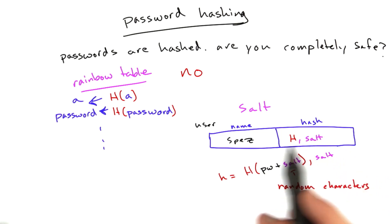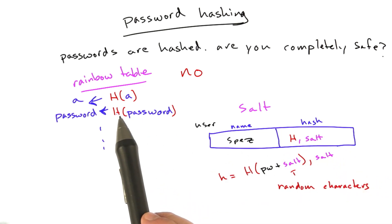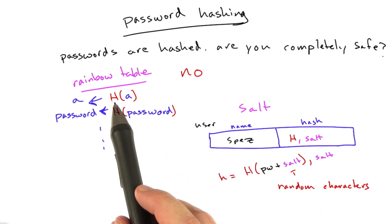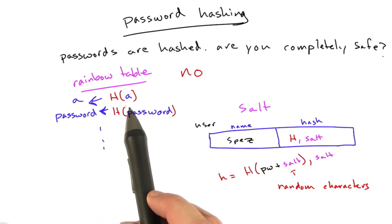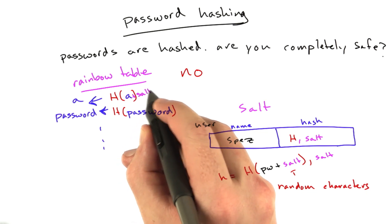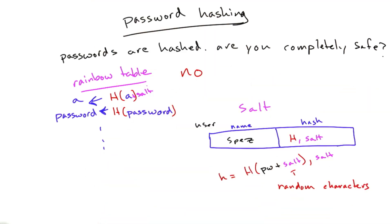And what this does is this prevents this quick lookup from working, because all of a sudden we've added these random strings. So instead of saying hash of A equals A, we have to figure out, well, what's hash of A plus the salt? And all of a sudden that table is completely invalid.